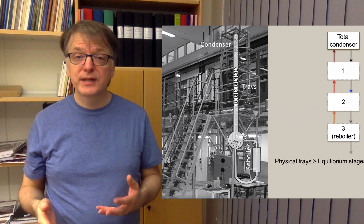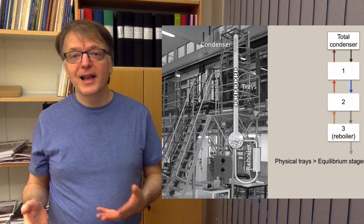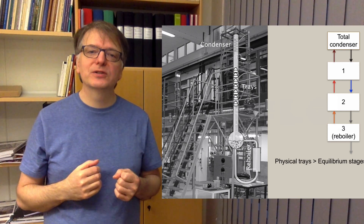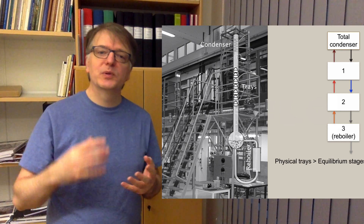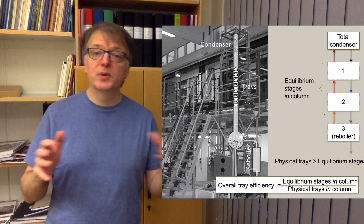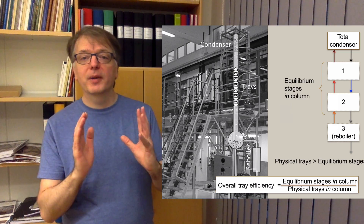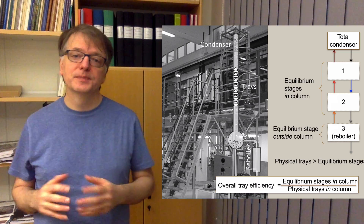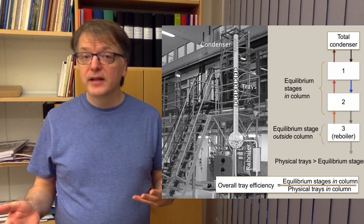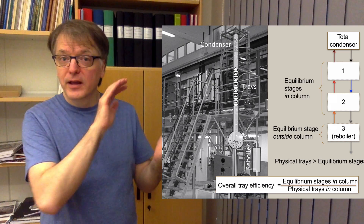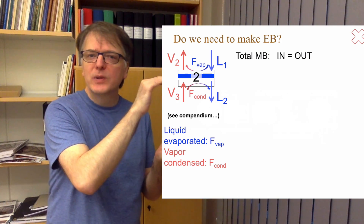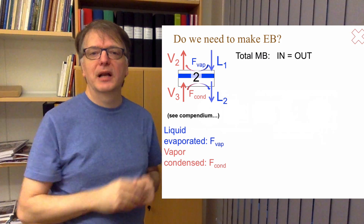We will always have fewer equilibrium stages in the column than actual physical trays, and the ratio between the two is the overall tray efficiency, which is what we use to convert between the mathematical model and the real world. We need mass balances and energy balances, but if you make mass balances over an equilibrium stage, we sometimes don't need an energy balance.